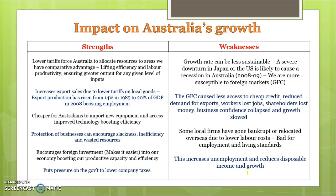In terms of Australia's economic growth, there's been a range of positives and negatives. Growth refers to the overall production and income earned by Australian citizens. In terms of the benefits, lower tariffs have forced Australians to allocate resources to areas of comparative advantage — essentially areas where we have lower opportunity costs. That's helped to boost efficiency and increase labour productivity, meaning we've generated more output from any existing level of inputs, such as more output per hour of labour.